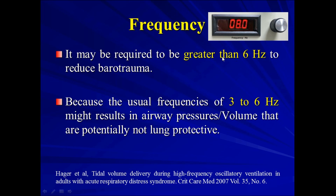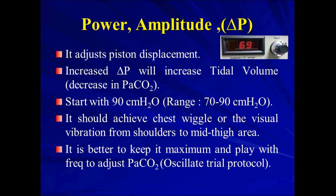It may be required to go greater than 6 Hz to reduce barotrauma, because the usual frequencies of 3 to 6 Hz might result in airway pressure volumes that are potentially not lung protective. For the power, amplitude, or delta pressure, it adjusts the piston displacement. Increasing delta pressure will increase tidal volume and decrease PCO2. If the patient has higher CO2, you might increase the power. Starting with 90 cm of water, the range is 70 to 90 cm of water for adults. It should achieve chest vibration from the shoulders to the mid-thigh area. It's better to keep it at maximum and play with the frequency to adjust PCO2. This is the OSCAR trial protocol.